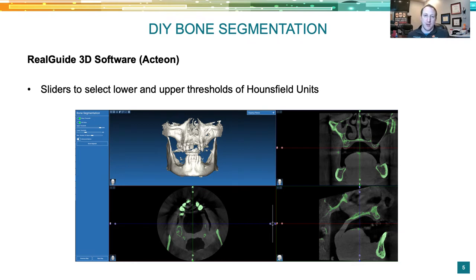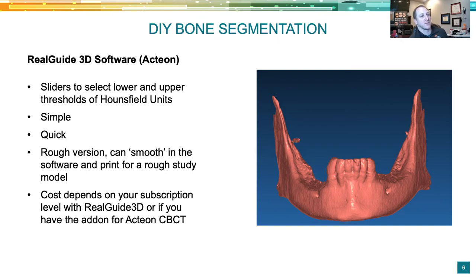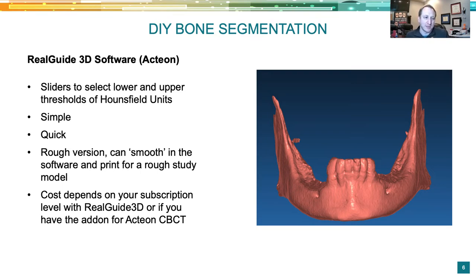This might be really nice for just getting a quick and dirty mandible you can print and look at, or a 3D file you can spin around on your laptop or phone. It doesn't cost extra export fees if you already have a RealGuide license. However, the output can be rough — there might be little artifacts from scatter, like an earring sticking off the bottom of the mandible. You can smooth it in software or clean it up with mesh mixer, but it's quick and simple, just not the most accurate.